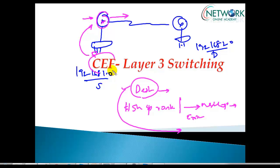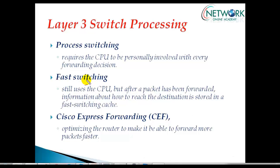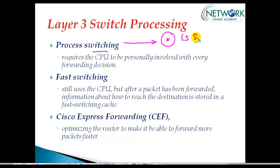CEF is an advancement over this traditional process, ensuring packet forwarding happens much faster. Before CEF, there were two initial methods used to forward packets. The first is process switching. In process switching, whenever any packet enters the router, the router performs a Layer 3 lookup — a software-based process — checking the destination network ID and then the next-hop IP address.